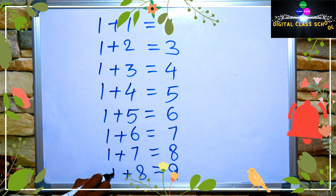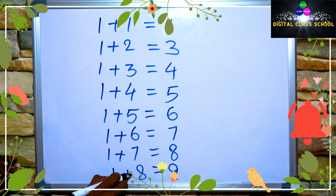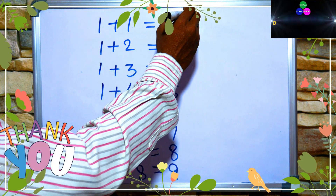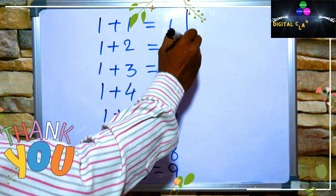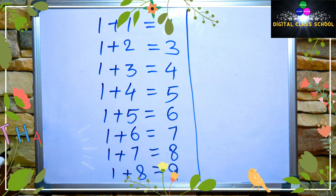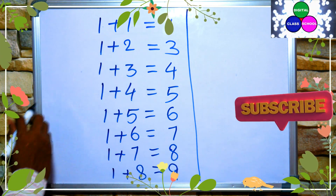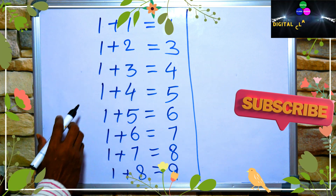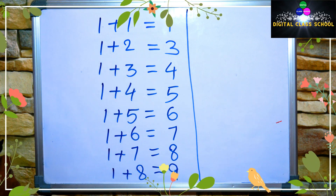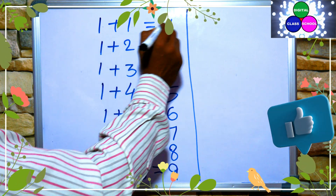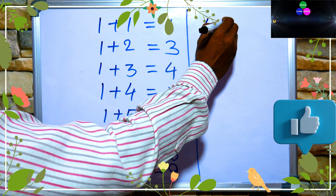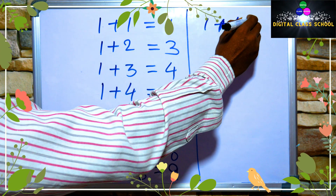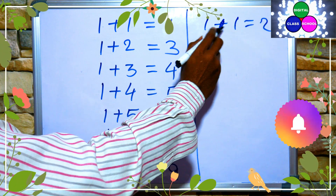In English, 1 plus 8 is equal to 9. 1 plus 9 is equal to 9. Now explain how to understand this table. 1 plus 8 is equal to 9. 2 plus 8 is equal to 9.